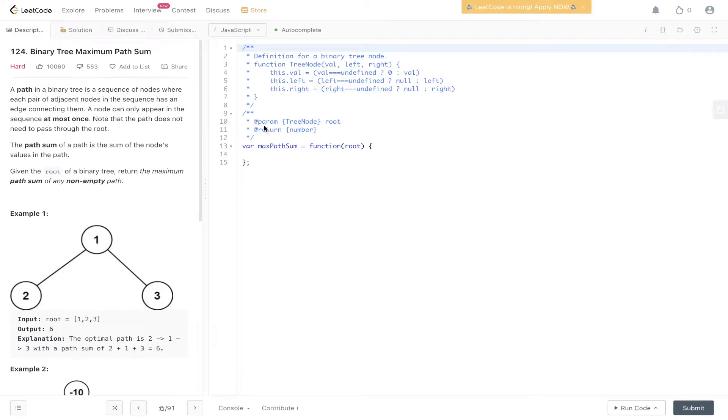Welcome back to Algo.js. Today's question is LeetCode 124, binary tree maximum path sum.